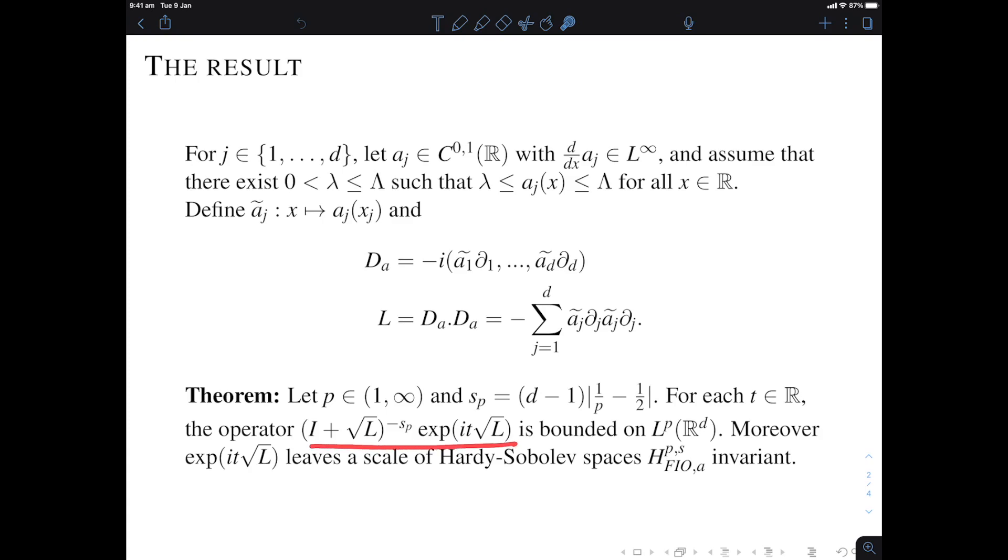if you regularize it enough then it becomes bounded on L^p. Or put in a different way, the theorem identifies which are the Sobolev spaces of data that are mapped to L^p under the action of this wave propagator. And this number here is the magic number, it's known to be optimal even in the case of the Laplacian. So (d-1) times (1/p - 1/2)